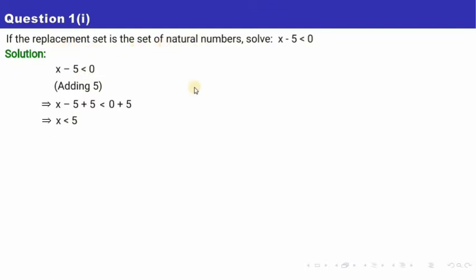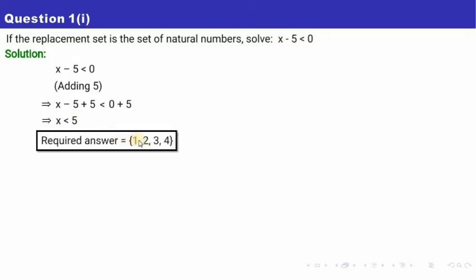Since x is a natural number and the replacement set is the set of natural numbers, we need the natural numbers which are less than 5. Those are 1, 2, 3, and 4. So the solution set is {1, 2, 3, 4} — written within curly brackets since it is a set.